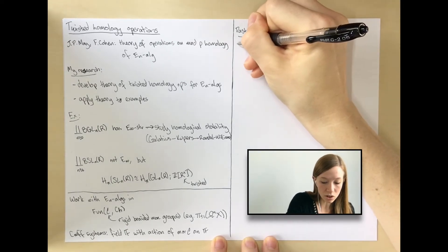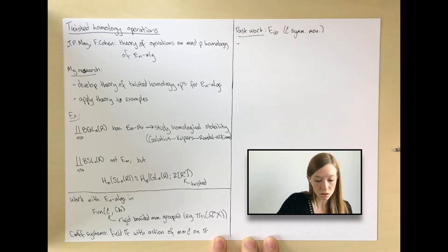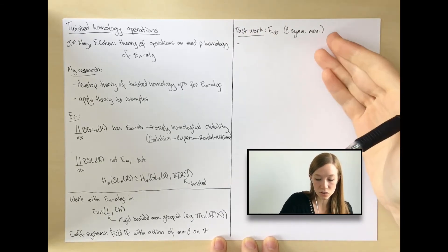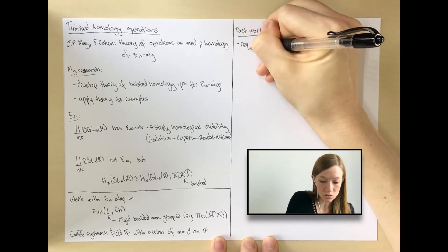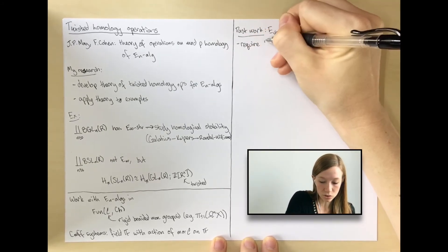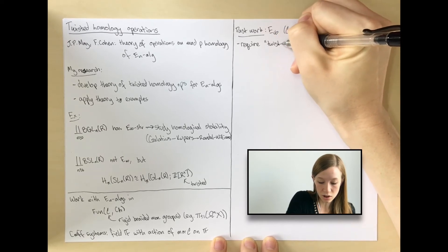So in some places, the classical Dyer-Lashof operations are actually defined here, but you also need some additional operations, which are sort of like twisted versions of the Dyer-Lashof operations.